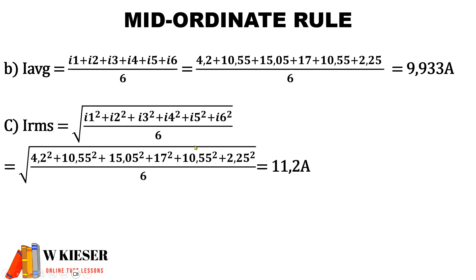To calculate IRMS, it is the square root of the square of each mid-ordinate value divided by the number of mid-ordinate values. So we substitute our mid-ordinate values into the equation. Don't forget to square each mid-ordinate, divide by 6, and then square root that answer. That will give us an IRMS of 11.2 amps.